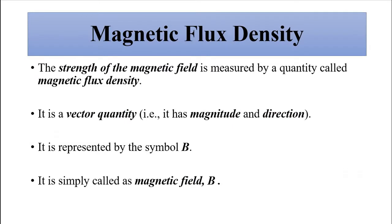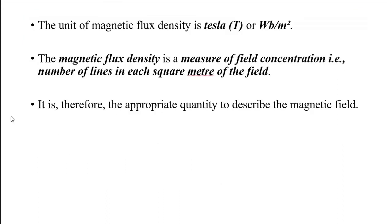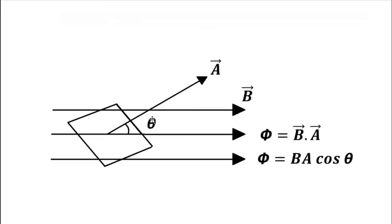We have already covered magnetic flux density, which gives us the strength of the magnetic field. It is represented by the symbol B and has units of Tesla or Weber per meter squared. We also discussed magnetic flux, which is the number of magnetic field lines passing through a surface area. It is given by the dot product of the magnetic flux density vector and the area vector normal to the surface, which gives us B·A·cos θ.